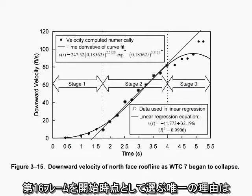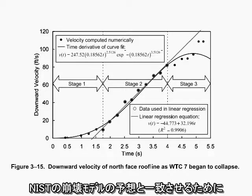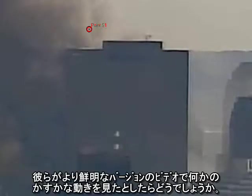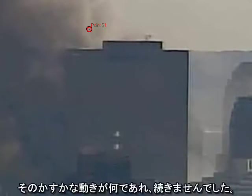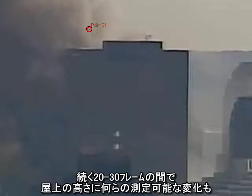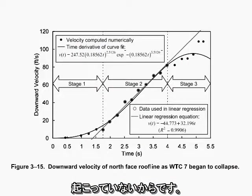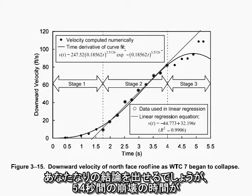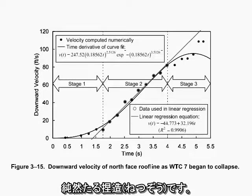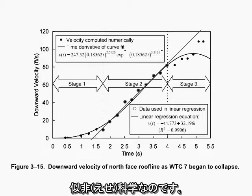The only rationale I can see for choosing frame 16 to start the clock is to make the measurement come out to exactly 5.4 seconds, to agree with the prediction of NIST's collapse model. But what if I'm wrong? What if they did see some tiny movement on a clearer version of the video? That tiny movement, whatever it might have been, did not last. It would have had to have been a glitch, and the scientists at NIST would recognize it as a glitch, because there is no measurable difference in the height of the roof line for the next 20 to 30 frames. I think it's pretty clear that the whole idea there is any kind of real 5.4 second collapse interval is a fiction — a crude fabrication, and the three-stage collapse sequence is pseudoscience in the service of an ongoing cover-up.